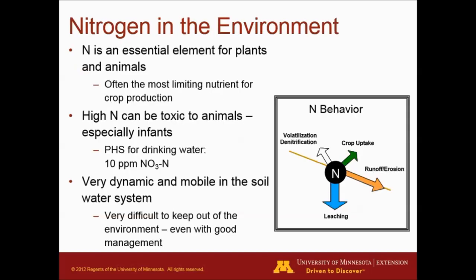Let's start with nitrogen. Nitrogen is an essential element for plants and animals. Nitrogen is the most limiting nutrient for crop production, meaning that we're required to apply manures or synthetic fertilizers in order to have high crop yields. However, some high nitrogen levels can be toxic to animals, especially infants as well as livestock. We have a public health standard for drinking water of 10 parts per million of nitrogen.